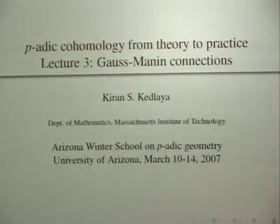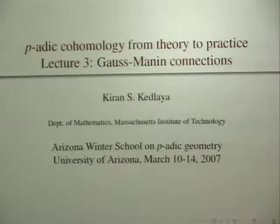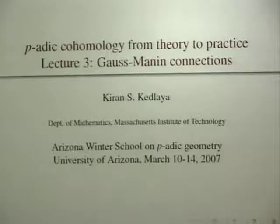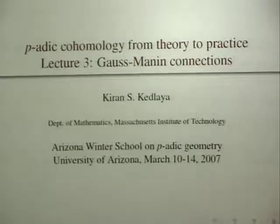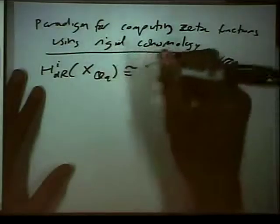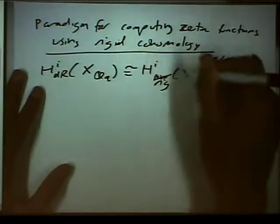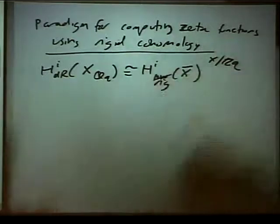So the paradigm for computing zeta functions using Monsky-Washnitzer, using rigid cohomology: you start out with a situation where you have a comparison with de Rham cohomology. You have some de Rham cohomology, you have some X over something like Z_Q, and the de Rham cohomology of the generic fiber is the same thing as the Monsky-Washnitzer cohomology, or the rigid cohomology more generally, of the special fiber — although this is usually affine, so it is the Monsky-Washnitzer cohomology.